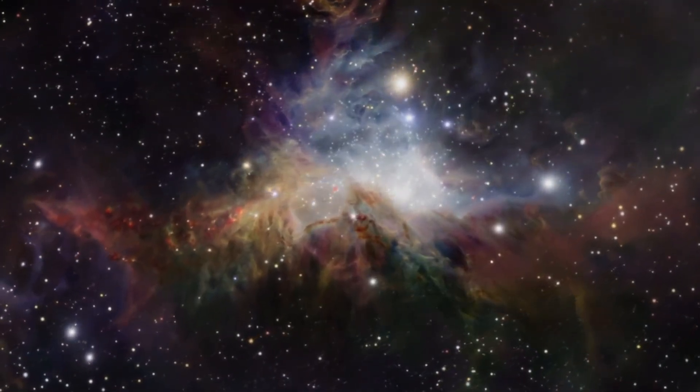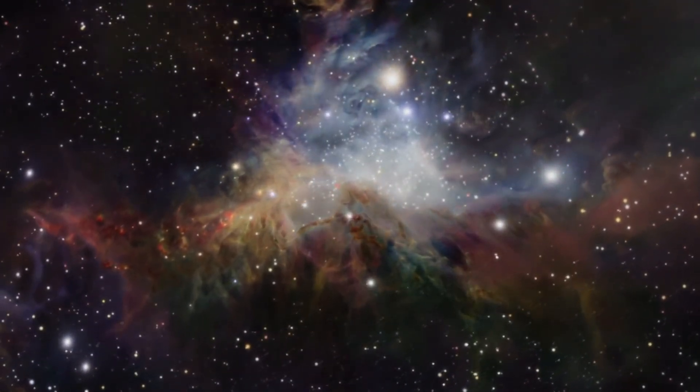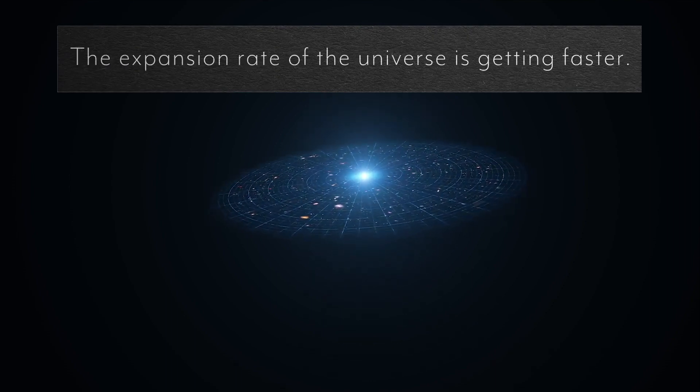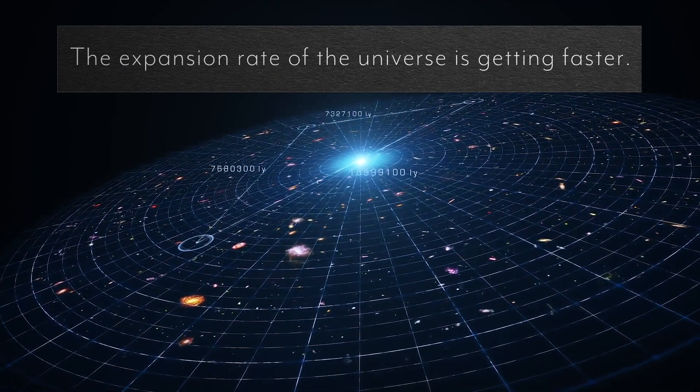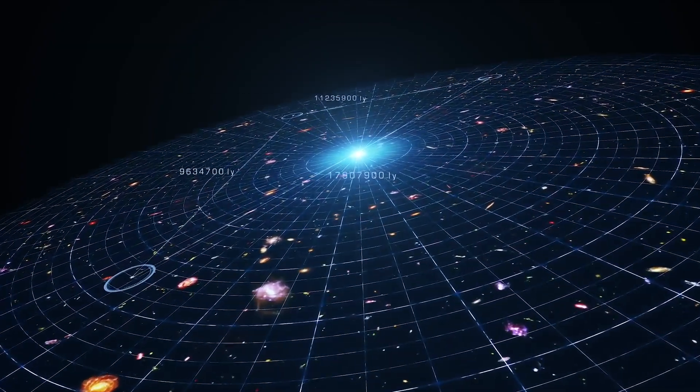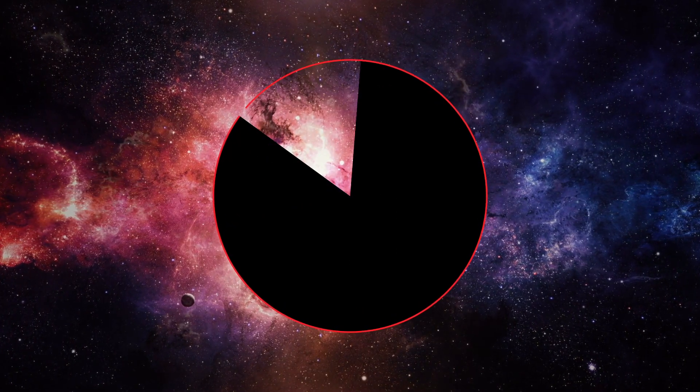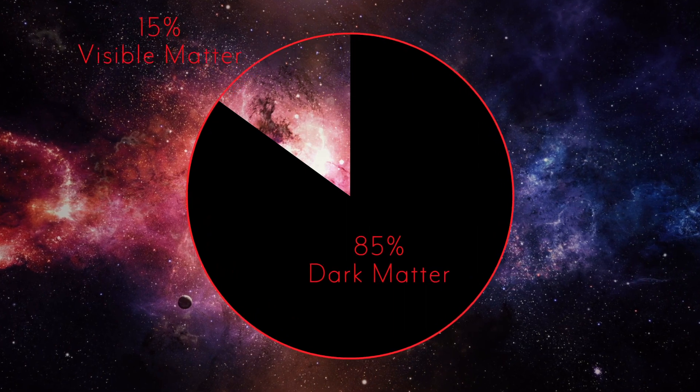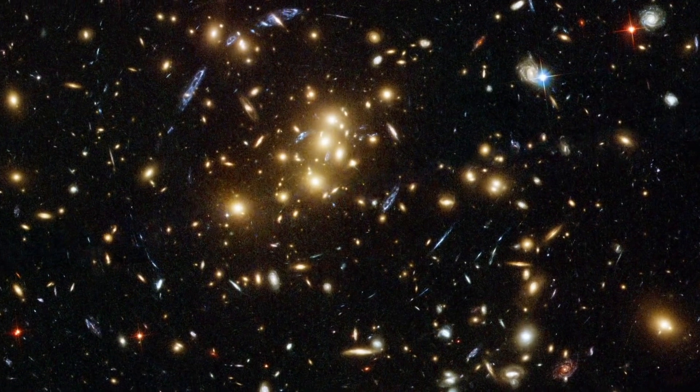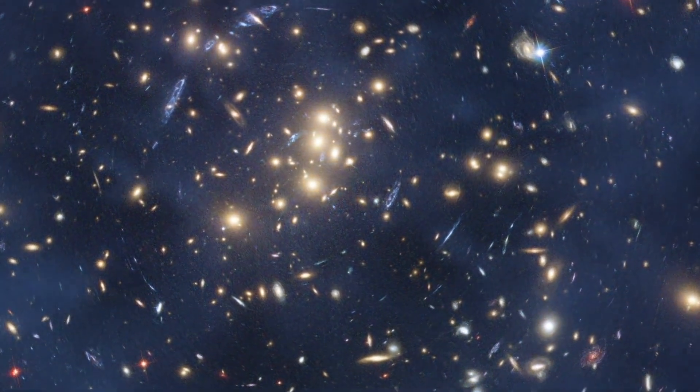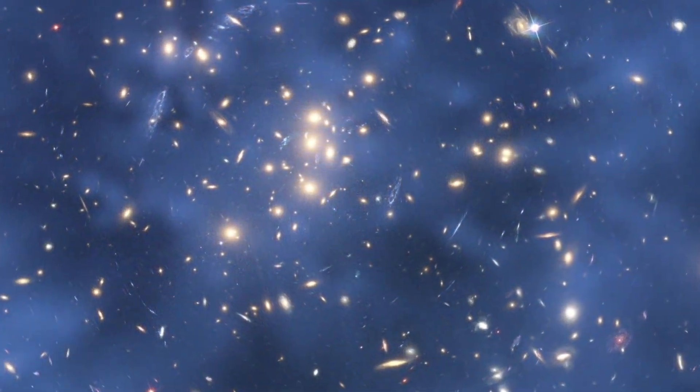Right now we know that the universe is expanding and we also know as of the late 90s that the expansion of the universe is speeding up. And we don't know exactly why it's speeding up. Whatever is making the expansion speed up we call that dark energy. We think it might be just a basic property of space that it has this kind of expansion built into it. We call that the cosmological constant.